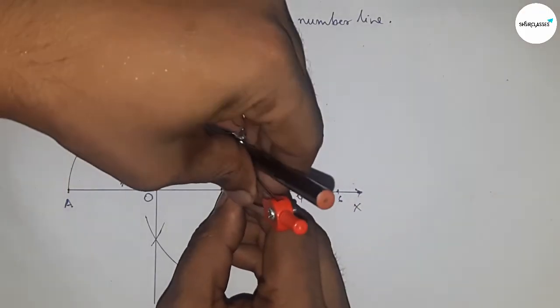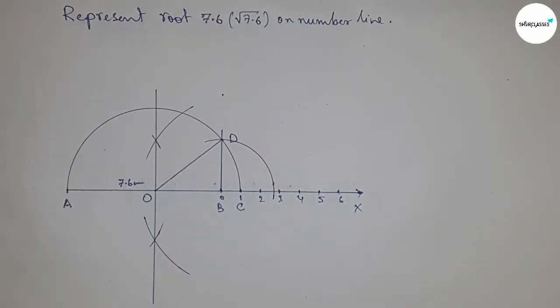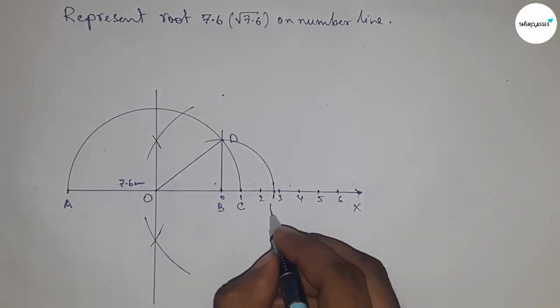Now take the length BD with a compass to draw an arc which meets the number line at point P, and this is the representation of root 7.6 on the number line.